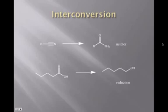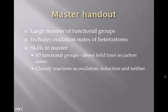And so, if we look at some inner conversions, this should be getting familiar to you now. Three bonds to heteroatom going to three bonds to heteroatom. Nitrile to amide is neither an oxidation nor a reduction. Three bonds to heteroatom in a carboxylic acid going to an alcohol with only one bond to heteroatom. That's a reduction. Accompanying this particular presentation is also a master handout with a large number of functional groups, all grouped by oxidation state. The skills to master are to identify the functional groups designated as being the most important ones and to acquire the ability to classify reactions as oxidation, reduction, and neither.